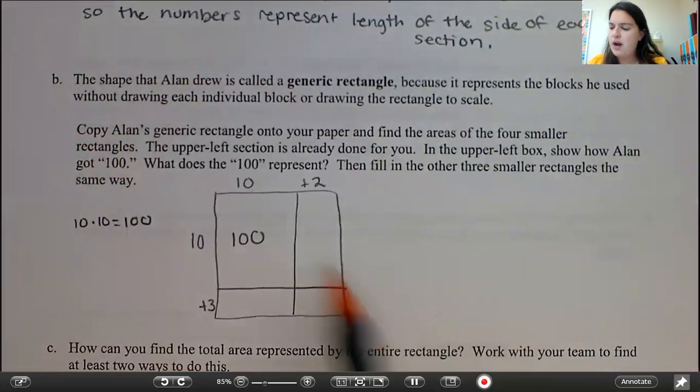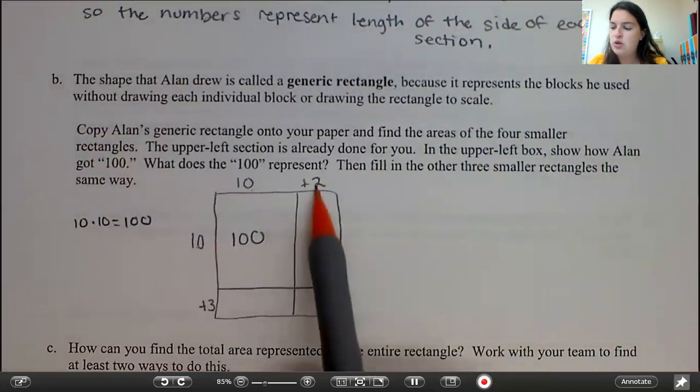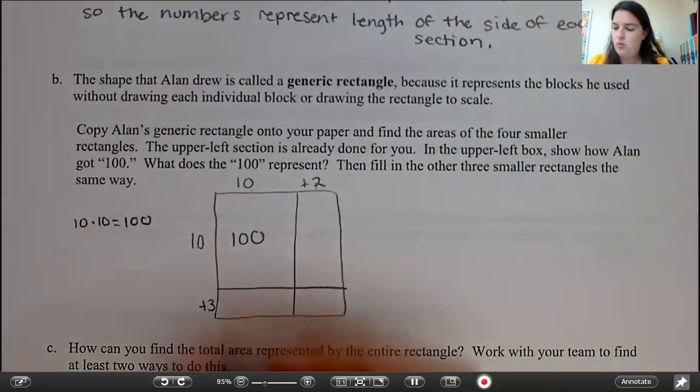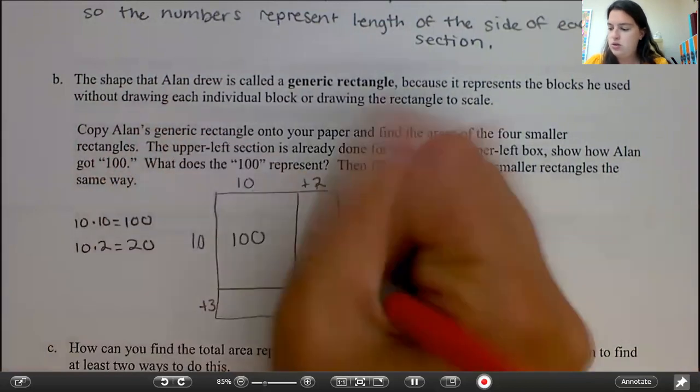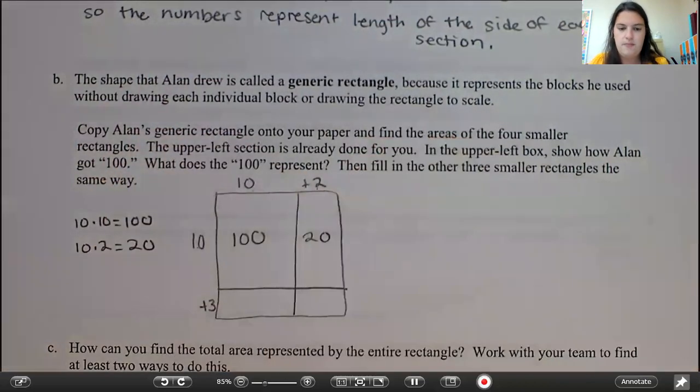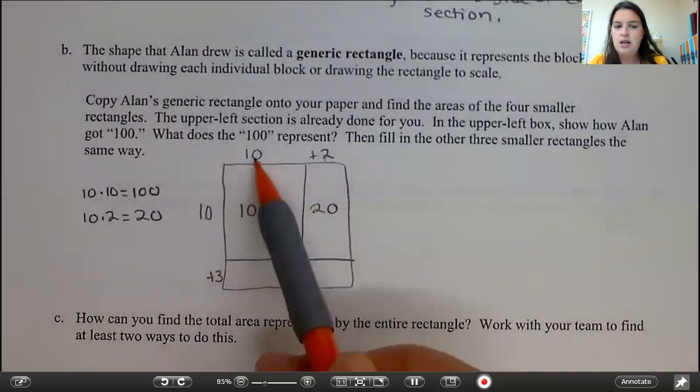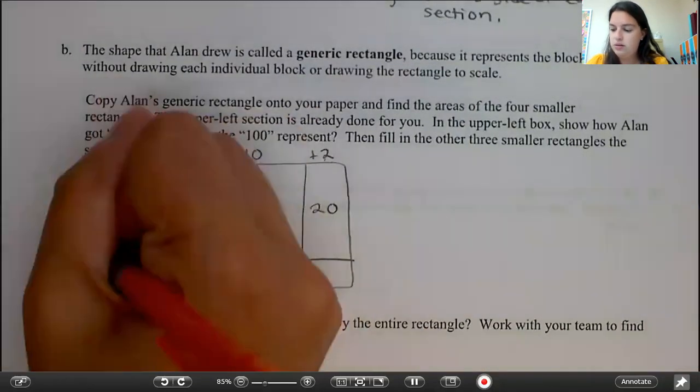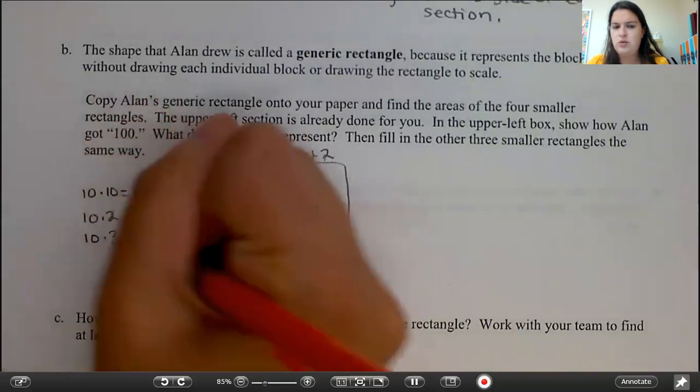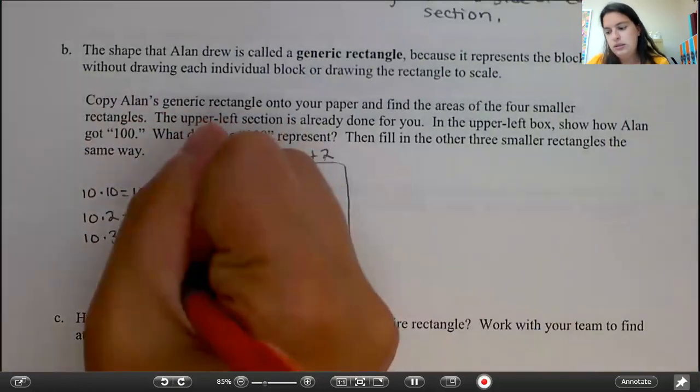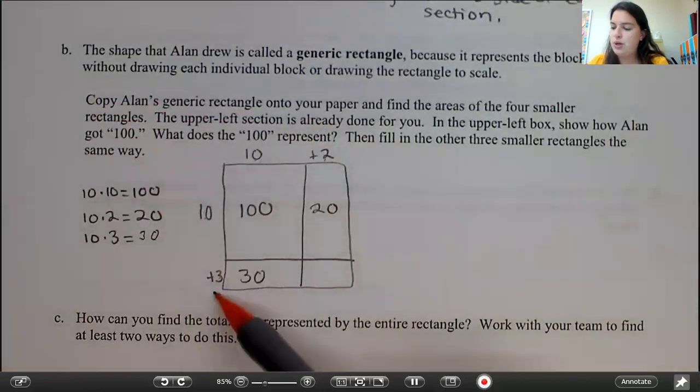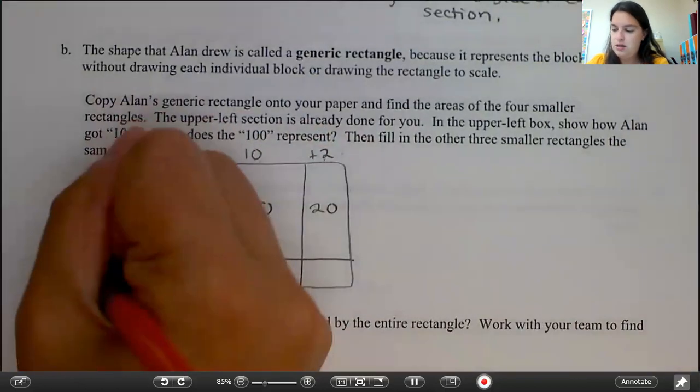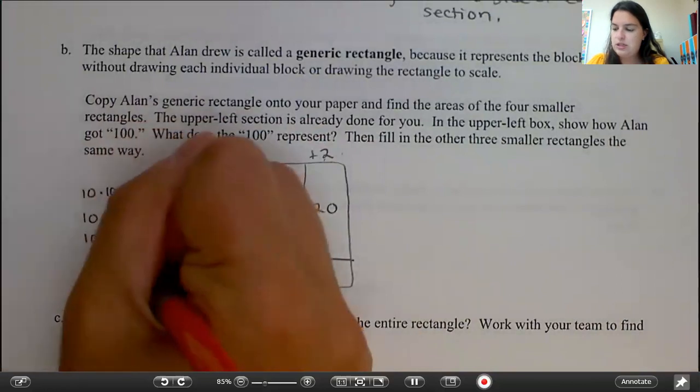So now if I wanted to do 10 times 2 to fill in this box, what am I going to get? Well, 10 times 2 is 20, so 20 goes in that box. Now I need to come down here: 10 times 3. Well, what's 10 times 3? 30. And then we finally have 3 times 2, which is 6.